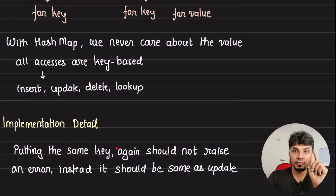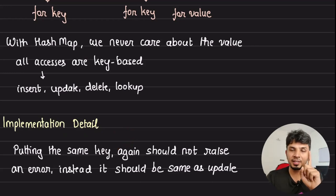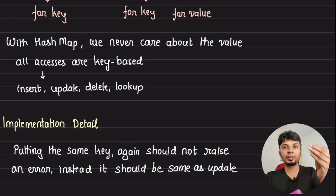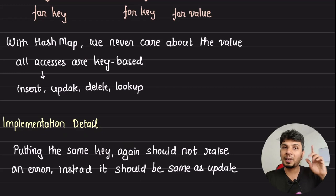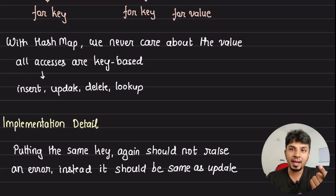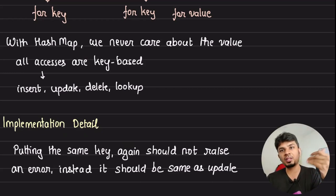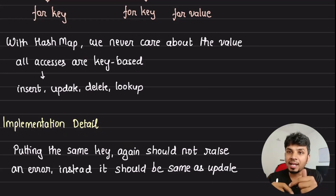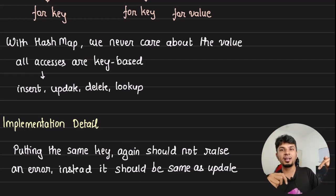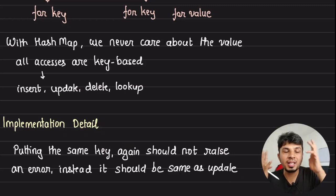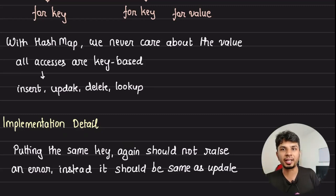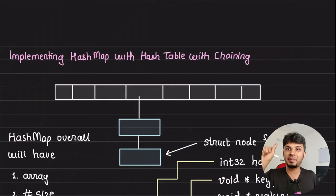Putting a key in a hash map has an interesting nuance. If a key already exists and we're trying to insert the same key again with a different value, we cannot just discard it like we did in a hash set implementation. Instead, the value should be replaced — the update needs to kick in. We cannot discard a key that already exists in the hash map, which is where updation is required.